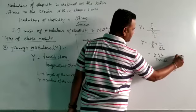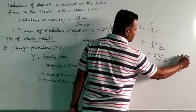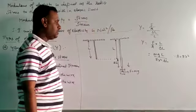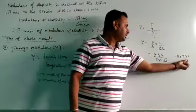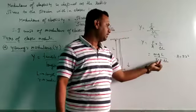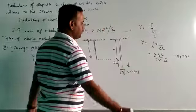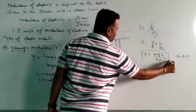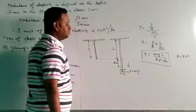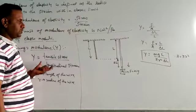I am writing here, A equals the area of cross section of the wire. R here indicates the radius of the wire, so area can be written as pi r square. Therefore Y equals m into g into l over pi r square delta L. This will be Young's modulus here.